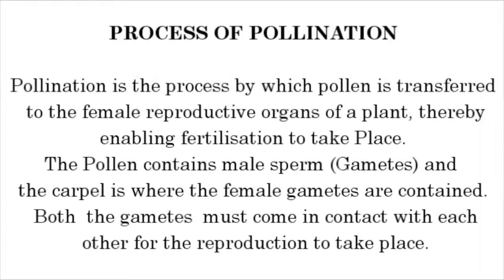Process of pollination. Pollination is the process by which pollen is transferred to the female reproductive organs of a plant, thereby enabling fertilization to take place. The pollen contains male sperm gametes, and the carpel is where the female gametes are contained. Both gametes must come in contact with each other for reproduction to take place.